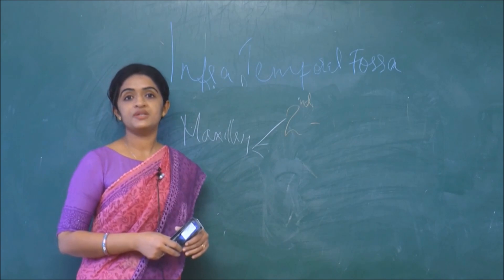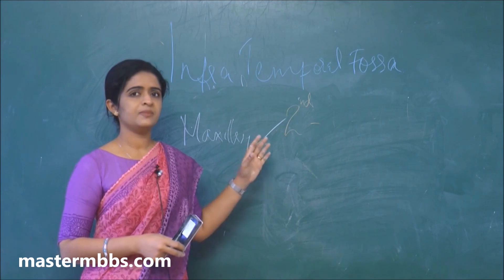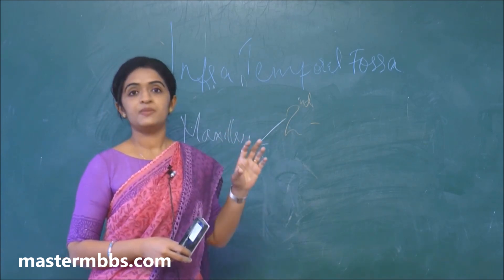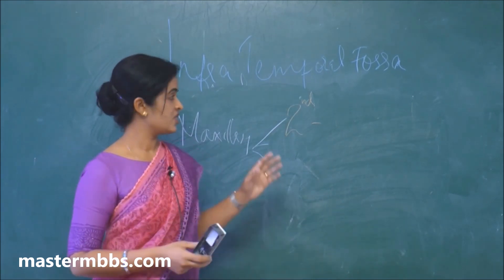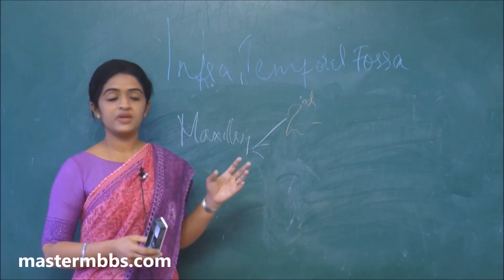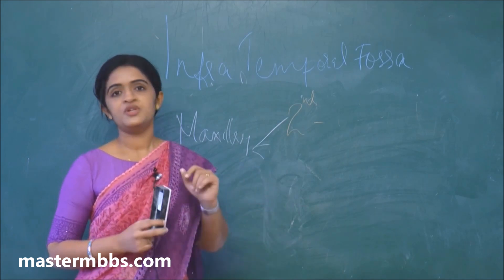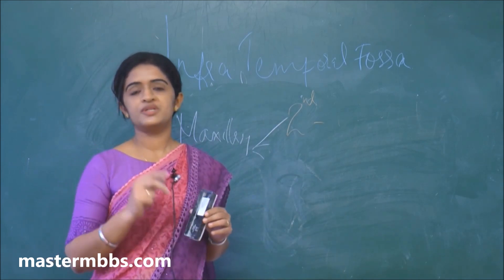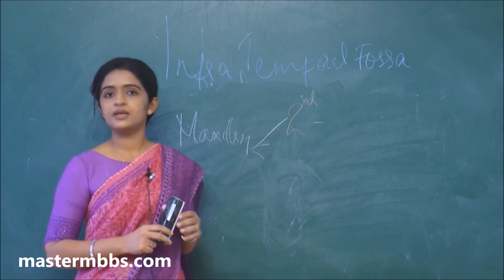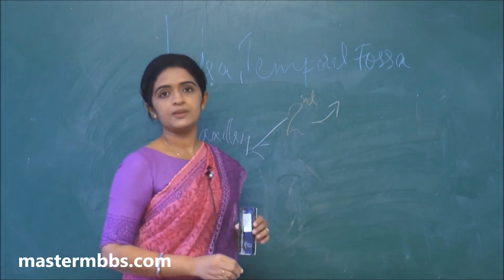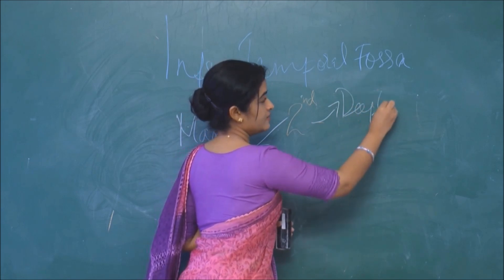Now we will see the branches arising from the second part of the maxillary artery. The second part is mainly concerned with the blood supply of muscles in and around the infratemporal fossa — the temporalis and pterygoid muscles within, and the masseter and buccinator around it. The branch supplying the temporalis muscle is called the deep temporal branch.